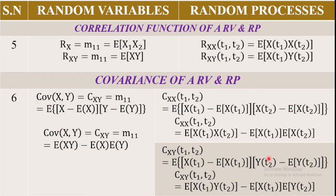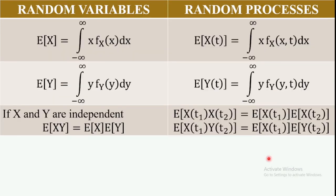Here also shown are the correlation function and covariance of random variables and the random process. Since this is a short video, the correlation function and covariance of random variables and random process will not be explained in detail. Also shown is the mean value of the random variable and the mean value of the random process definition.